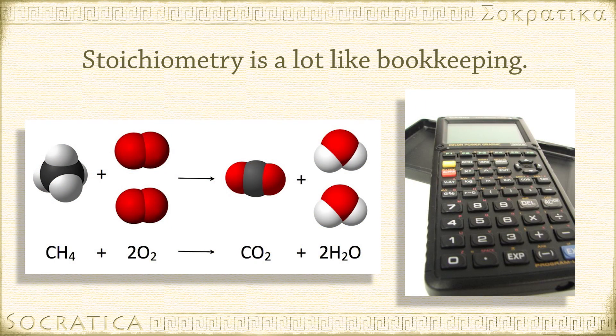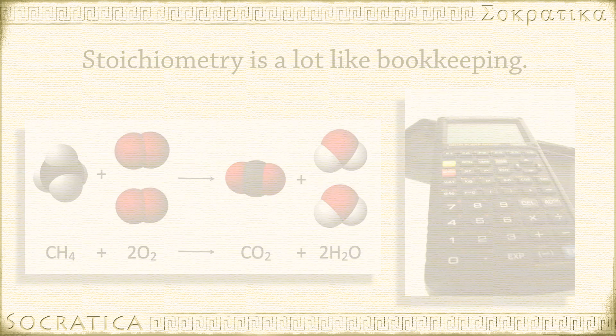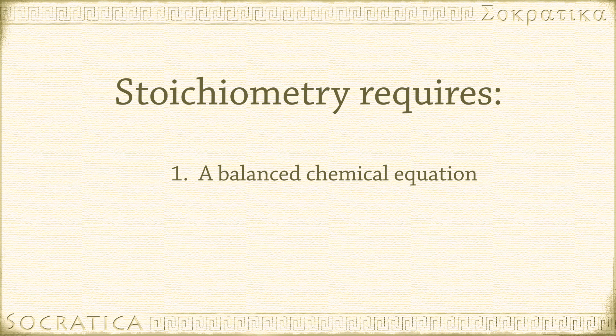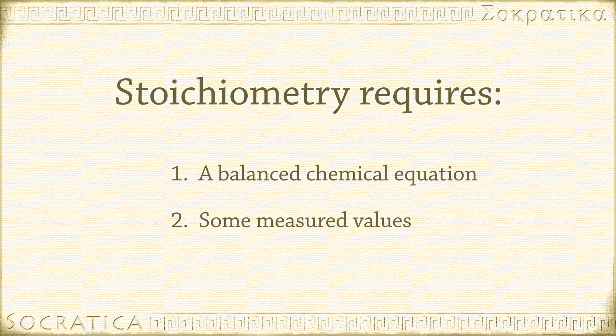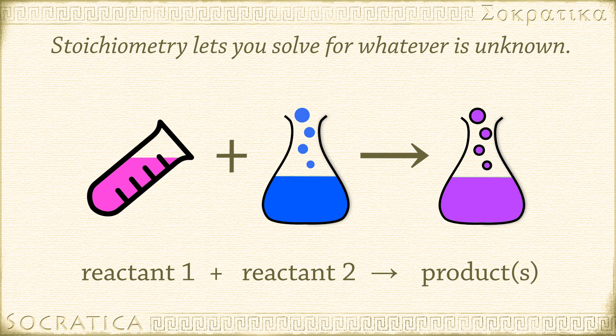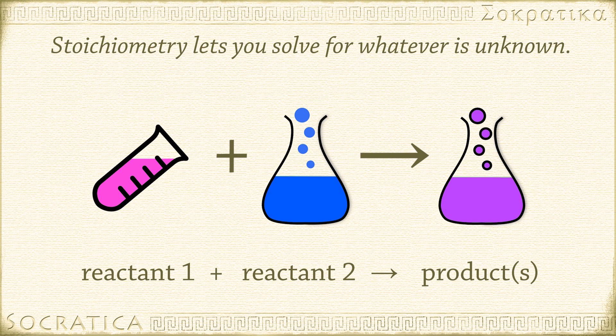In Stoichiometry Part 1, we learned the basics about this kind of chemical bookkeeping. If you have a balanced chemical equation and some measured values, you can use this information to find whatever is unknown. It's really common to measure the amount of one reactant in order to figure out how much product you expect to get.